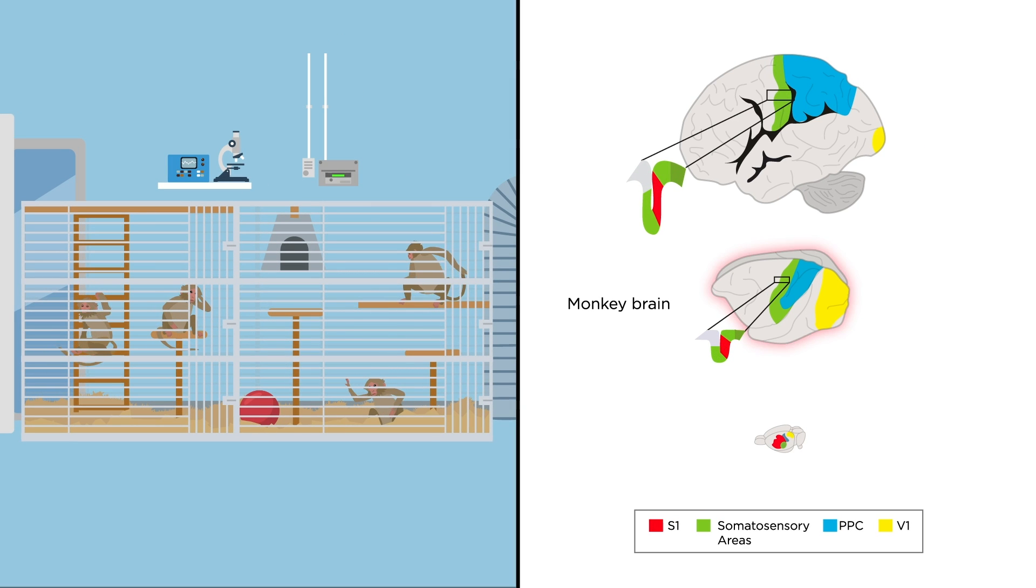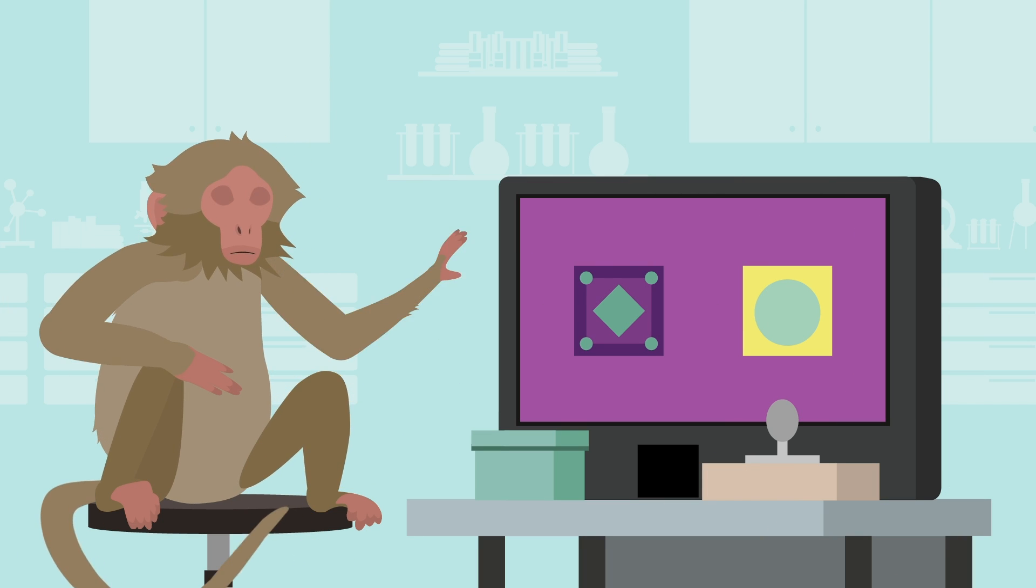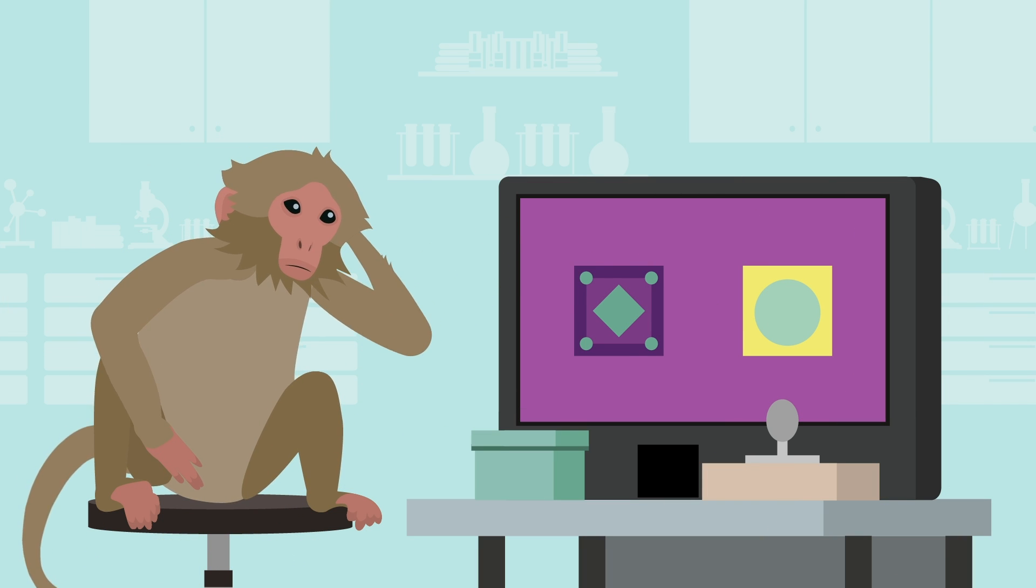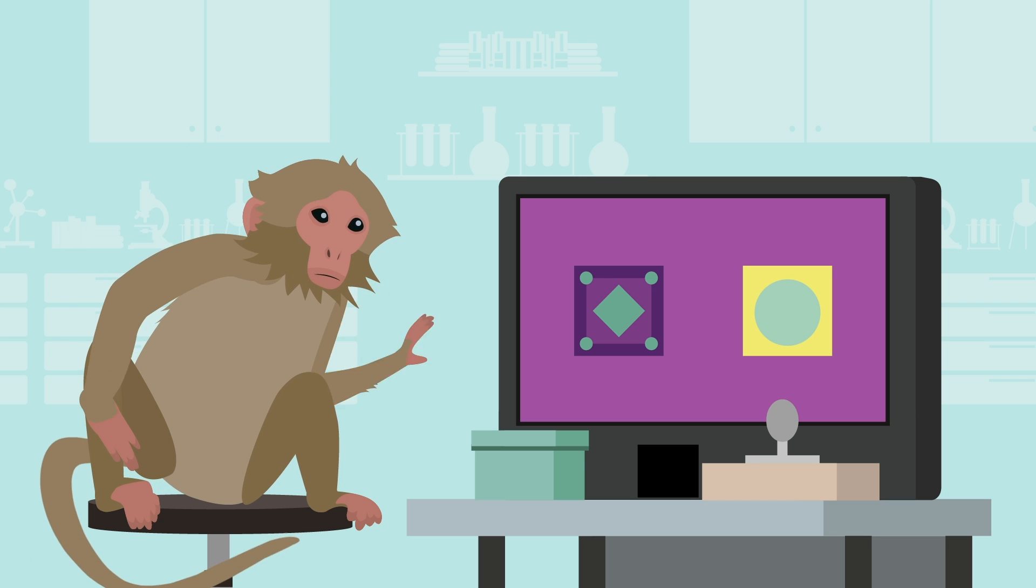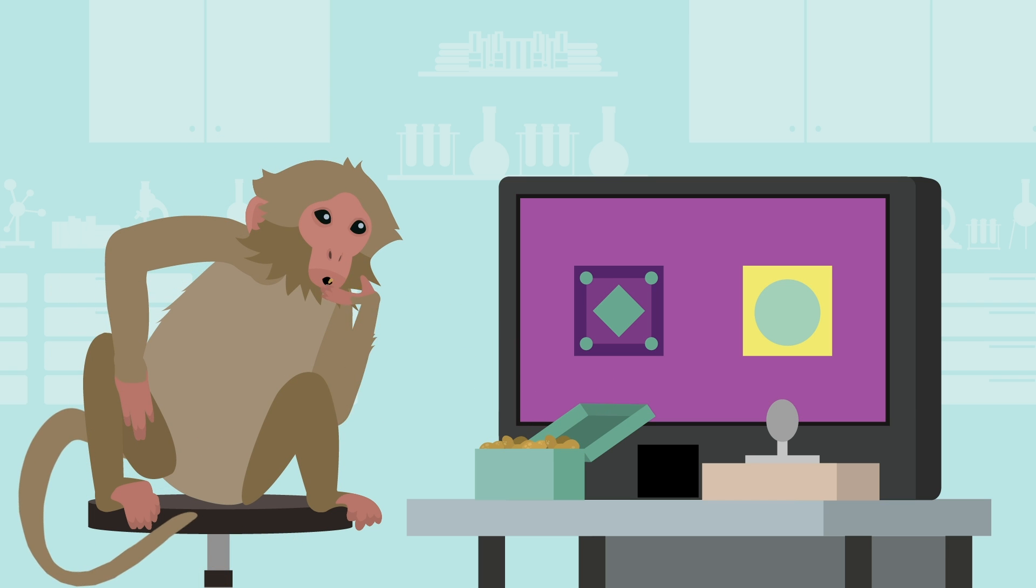The monkey brain is more similar to the human brain. With training, monkeys can carry out visual discrimination tasks on touch screen computers, similar to humans. They receive food for correct choices.